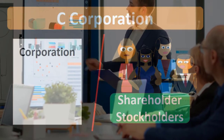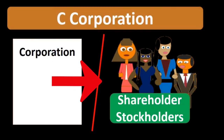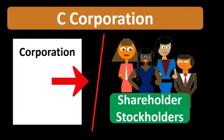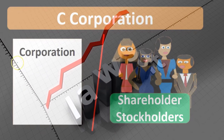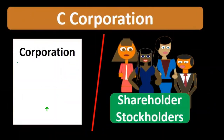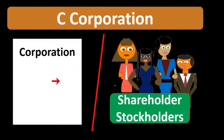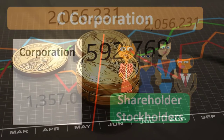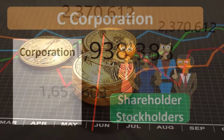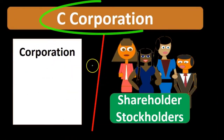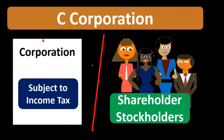One benefit of the corporation being a separate legal entity is that it has its own assets and has rights to those assets separate from the shareholders. This means that if something happened in terms of liability — in terms of a lawsuit — the lawsuit could go after the corporate assets, and there could be some liability protection for the owners, the shareholders and stockholders, regarding their personal assets, allowing a lot more capital to be invested in a corporation.